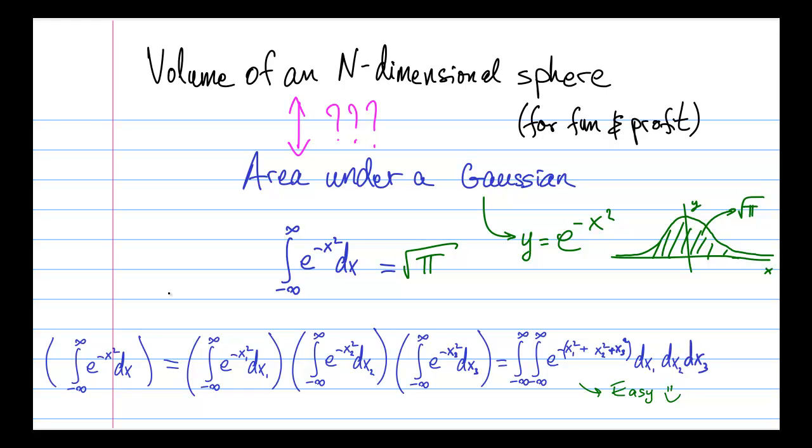So now that we've done the case for two and three dimensions, let's do the case for n dimensions. By now it should be pretty clear how we proceed. We take this integral to the nth power, rewrite it in terms of n integrals, collect all the integral signs on the left and dx's on the right.